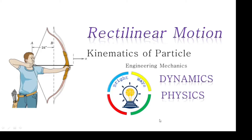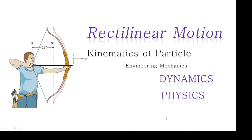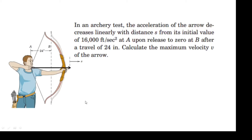In this portion we will discuss how to solve a rectilinear motion problem. The problem states that in an archery test, the acceleration of the arrow decreases linearly with distance s from its initial value of 16,000 feet per second squared at point A, upon release, to zero at point B after it travels 24 inches or two feet. We need to calculate the maximum velocity of the arrow.